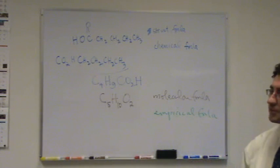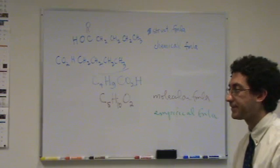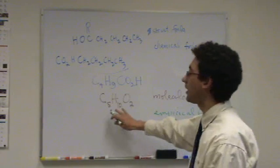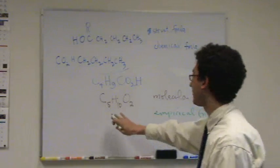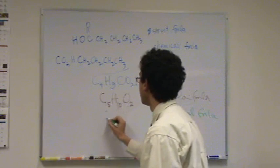the last formula of interest for us is the empirical. So the empirical, you just divide through by the most common number. In this case, there's nothing you can do. There's no common multiple that you can divide through. Like, if you divide through by 5, you'd have 2/5 here. So this is also the empirical formula.